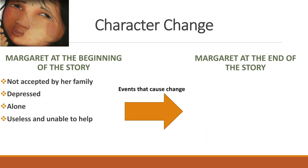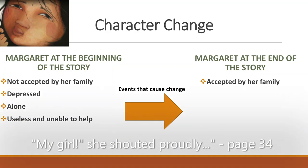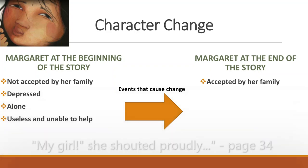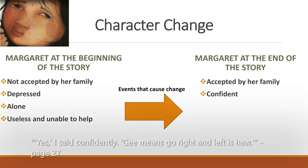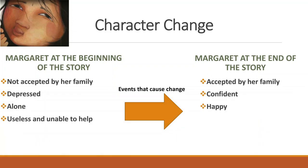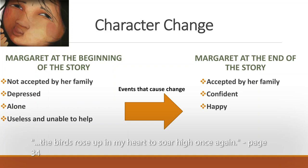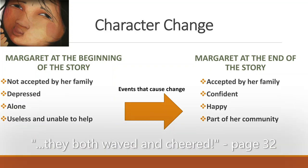Let's go back to our chart about character change. We already described Margaret at the beginning of the story, but what's she like now at the end of the story? Well, first you could say she's accepted by her family — there's evidence from the text on page 34 where her mom calls her 'my girl' proudly. You could also say that now she's confident, and we can find evidence of this on page 27 when she takes command of the dog sled. She's also happy now at the end of the story — at the very end, she describes how the birds in her heart are soaring. And lastly, we could say that she's part of her community again. The text gives us evidence of this when she drives past her friend and her mom and they wave and cheer on page 32.